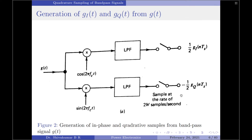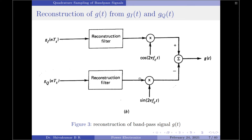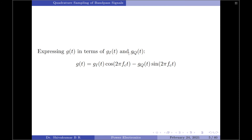Now let us discuss how to reconstruct the original band pass signal g(t) from the samples of gi(t) and gq(t). This is accomplished by using the diagram shown in figure 3. To reconstruct the original band pass signal from its in-phase and quadrature phase samples, we first reconstruct the in-phase component gi(t) and the quadrature phase component gq(t) from their respective samples. This is done by multiplying the outputs of the reconstruction filters by cos(2πfc·t) and sin(2πfc·t) respectively, and then adding the results as per the previous equation.